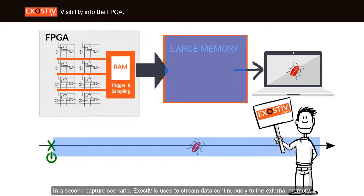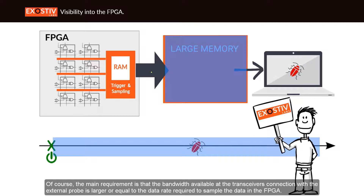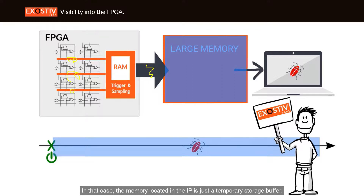In a second capture scenario, Exhaustive is used to stream data continuously to the external memory. The main requirement is that the bandwidth available at the transceiver's connection with the external probe is larger than or equal to the data rate required to sample the data in the FPGA. In that case, the memory located in the IP is just a temporary storage buffer.